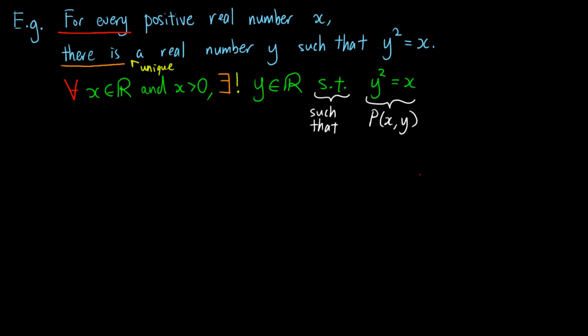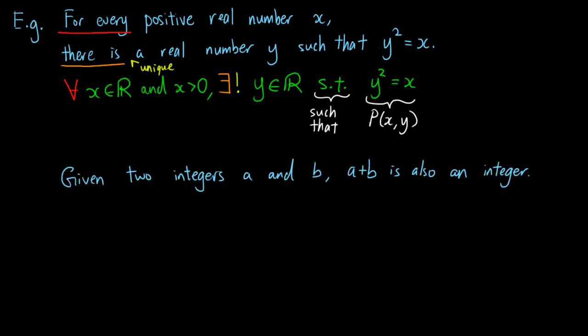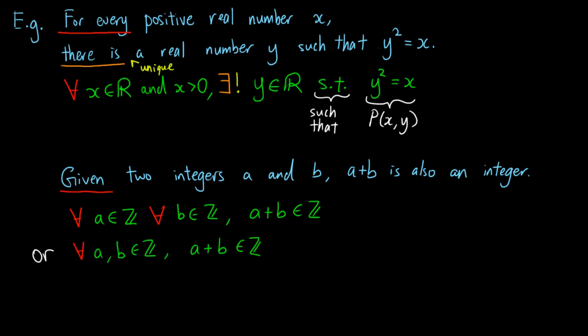Next, consider the predicate: given two integers A and B, A plus B is also an integer. Even though we cannot find a phrase like 'for any' straightaway, we see that the word 'given' actually has a universal meaning — it means that no matter what integers A and B you give me, A plus B is always an integer. So we quantify A and B using the universal quantifier: for all A in the set of integers, for all B in the set of integers, A plus B is also in the set of integers. We may rewrite this more succinctly as: for all A, B in the set of integers, A plus B is in the set of integers.